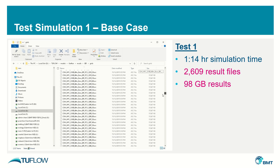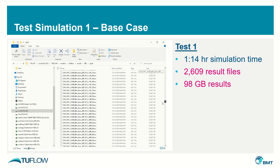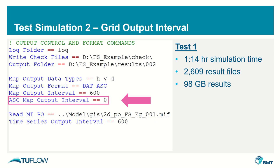Since we're also writing this exact same data to the DAT file, which is a more efficient binary file format, these ASCII files are completely unnecessary. For that reason, I'd recommend whenever you're writing ASCII output, don't write time-variant results in ASCII format. Only use it for maximums. You can turn off the time-variant results by using the command `ASC map output interval == 0`.